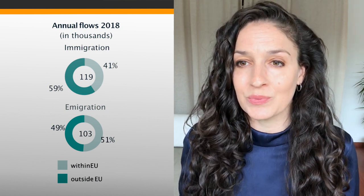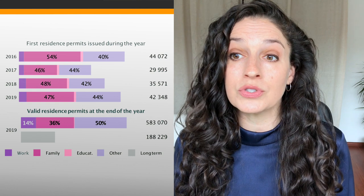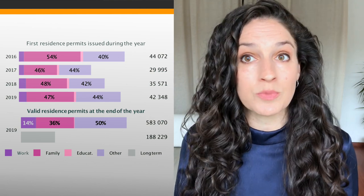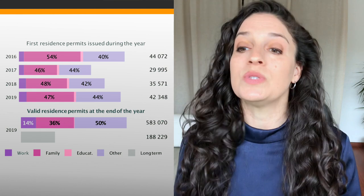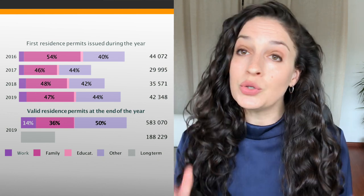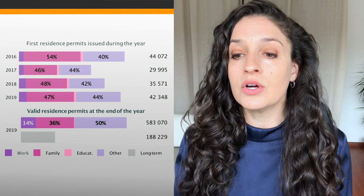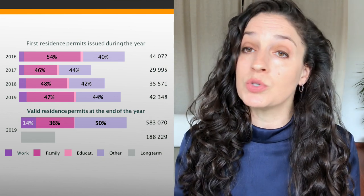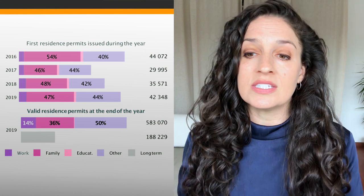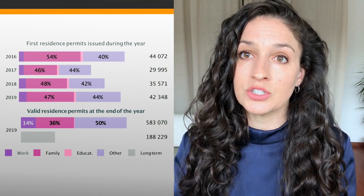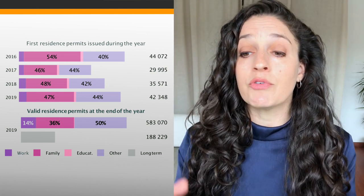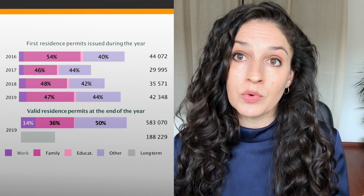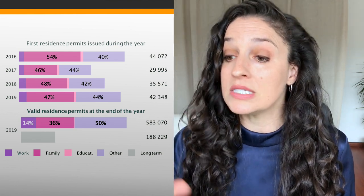Now let's look at residence permits, starting with first residence permits issued during the year. Residence permits are generally issued for non-European citizens. Between 2016 and 2019, the majority of first residence permits were for family reasons — either family reunification or family formation — or for other reasons, which could relate to asylum or refugee status. Work and education represent a much smaller share. Looking at valid residence permits at end of 2019, we see slightly more for work reasons, but family and other reasons still dominate.